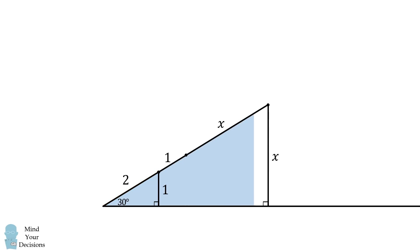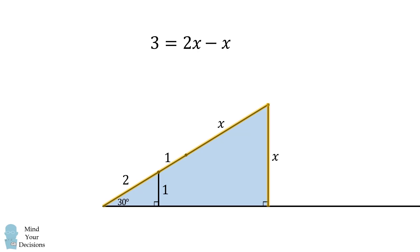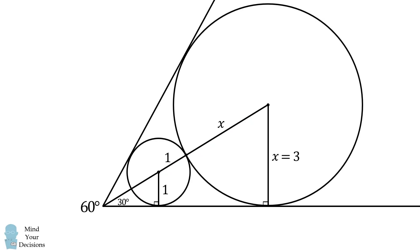We now have another 30-60-90 right triangle. This is a similar triangle. So we know that the hypotenuse, which is equal to x plus 3, must be twice the length of the shorter leg, so this is equal to 2 times x. We can then use this equation to solve for x. We subtract x from both sides, and we get that x is equal to 3. So we've solved that the second circle has a radius equal to 3.